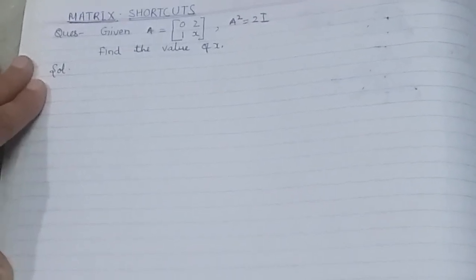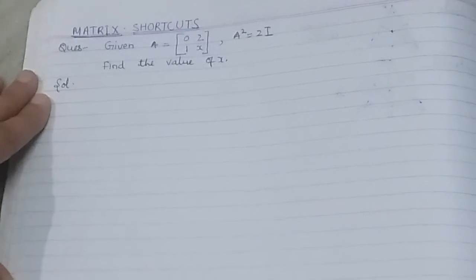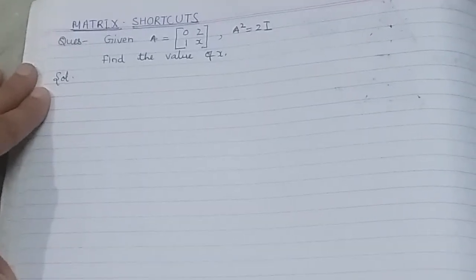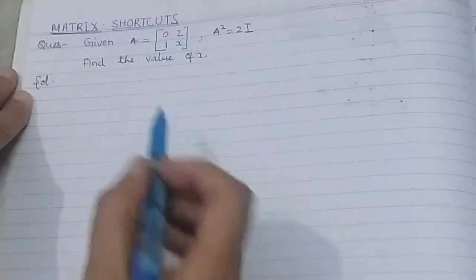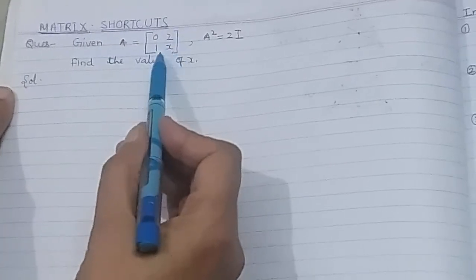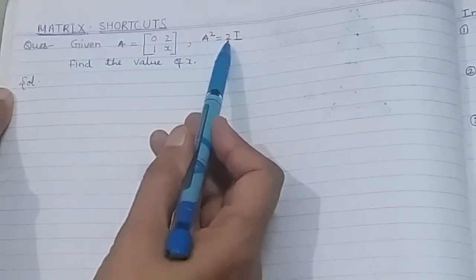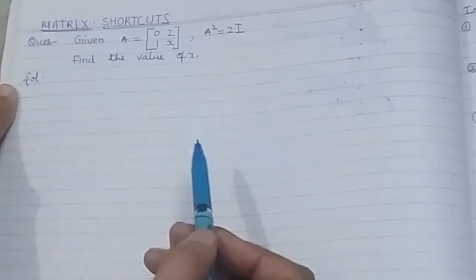Hello friends, in this video we will talk about another shortcut method for matrices. Our question is: given A = [0 2; 1 x] and A² = 2I, find the value of x.